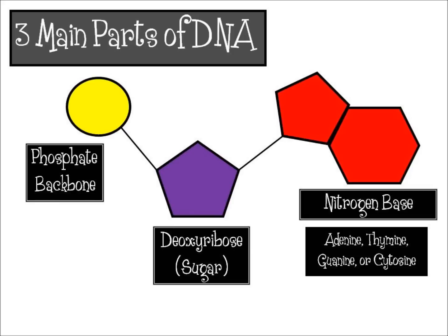We'll come back to the idea of a nucleotide in just a minute. First, here are the three main parts of DNA. DNA has a phosphate backbone — that is the round yellow circle you see there on the screen. It has a deoxyribose sugar molecule, which is the purple pentagon. And it has a nitrogen base. The nitrogen base can actually be one of four different things: adenine, thymine, guanine, or cytosine.